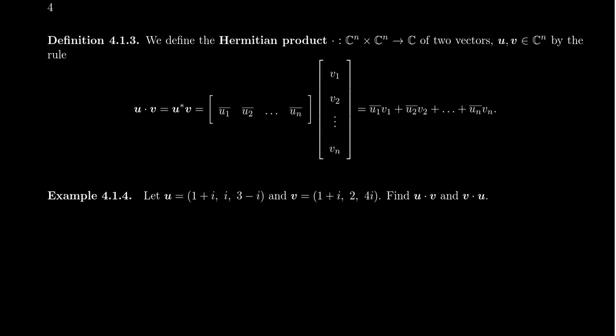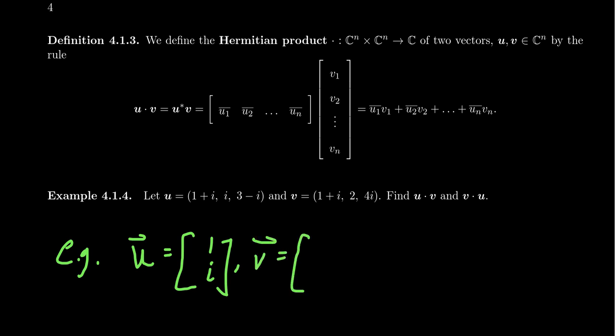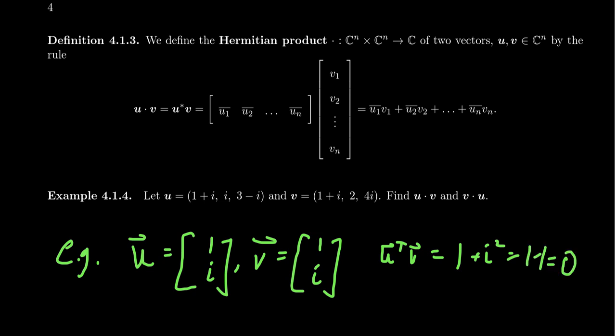I want to introduce the Hermitian product, which is the inner product for complex spaces. The problem is we could do a dot product of vectors in C2, C3, or Cn, but there's an issue. For example, take u = [1, i] and v = [1, i]. If we take u transpose v, we get 1 times 1 plus i times i, which is 1 plus i squared, giving 1 minus 1 equals 0. So the dot product of a vector with itself equals zero, and we don't want that to happen for inner products.